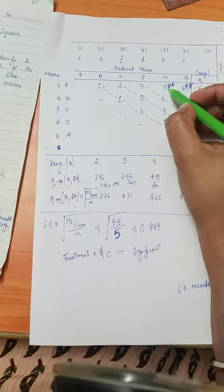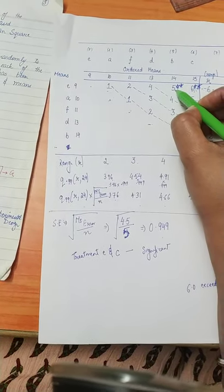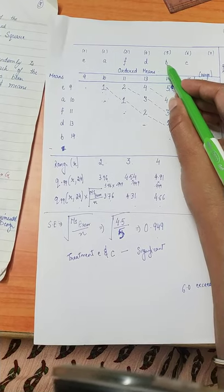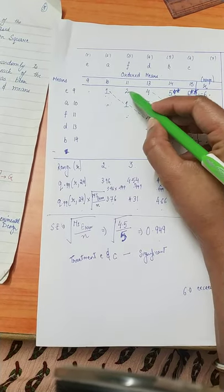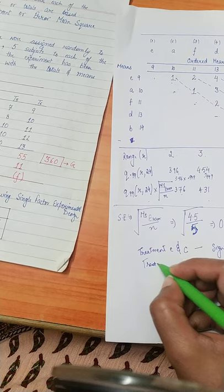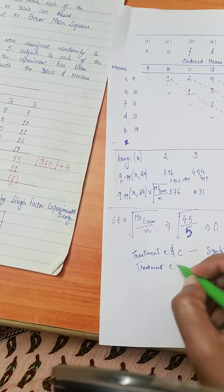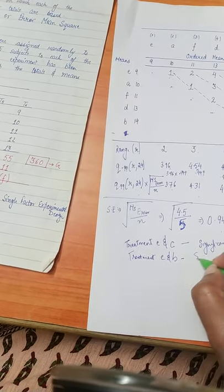We will see here. We will see which treatment difference is of B. Treatment number B and treatment number E. So treatment number E and B. It is also significant.